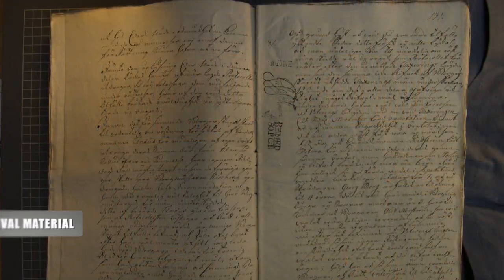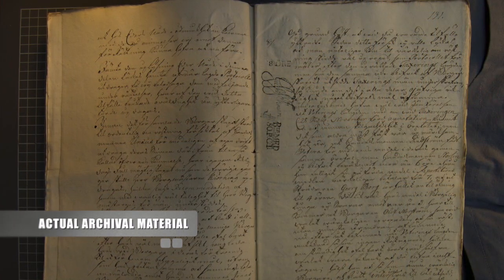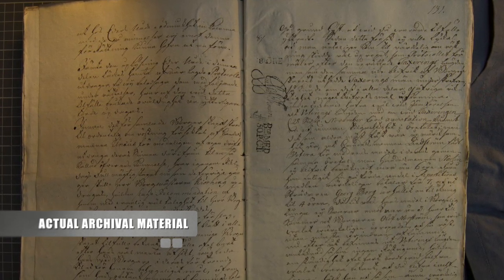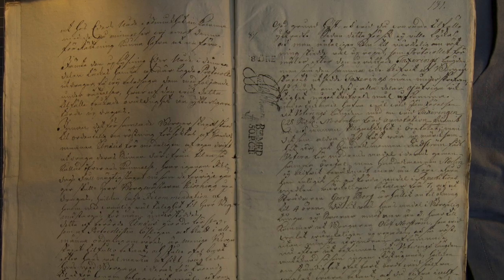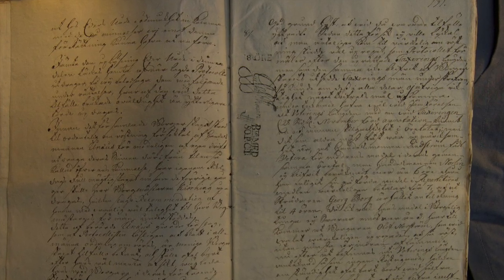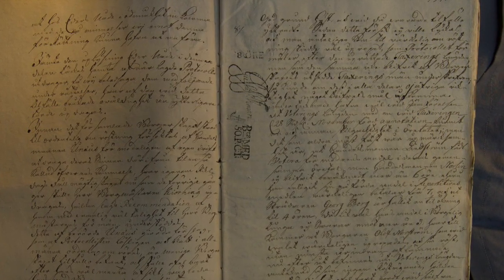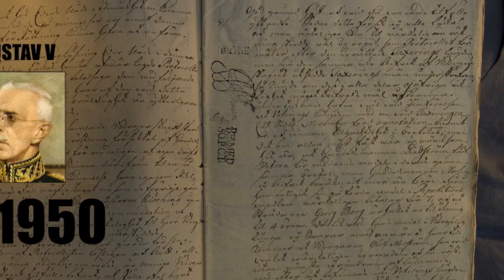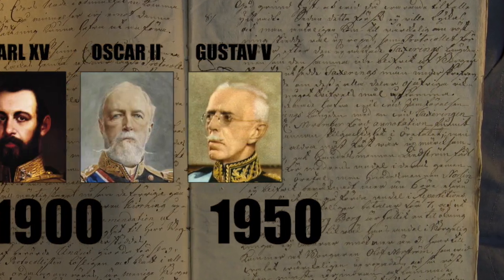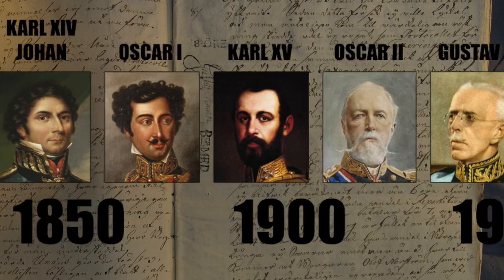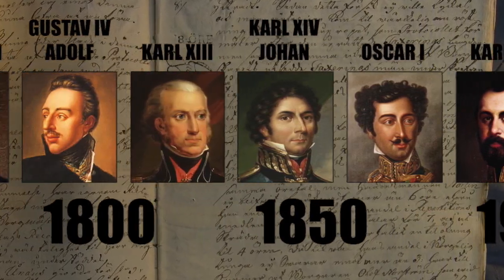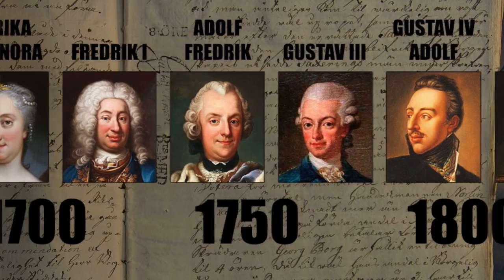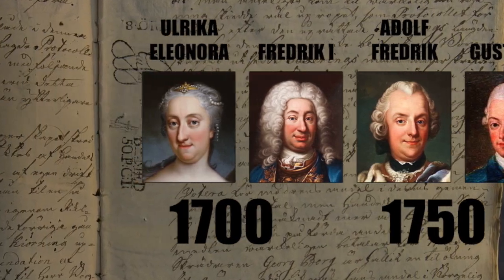Theorell decided to analyze changes of electoral fraud filed with authorities by disgruntled people. The frequency and nature of the complaints would provide some indication of how elections and election cleanness changed over time. The study took him back to 1719, when the first Diet of Estates convened during the so-called Age of Liberty, when electoral practices in Sweden first became firmly established.